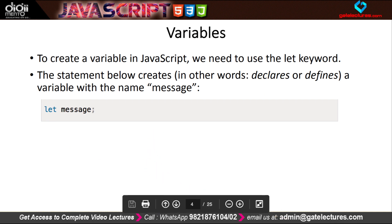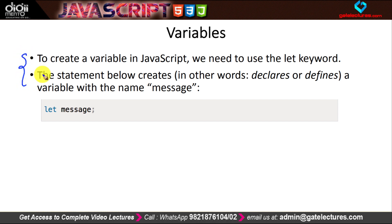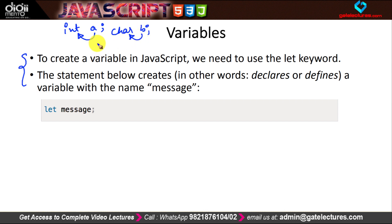So what are variables? Variables are something that contains some object or some information. For example, in C language we can create a variable with integer as a data type, or character, float, double — these are different data types for variables. In the same way we can create variables in JavaScript to store different values.